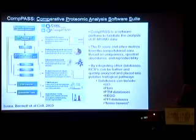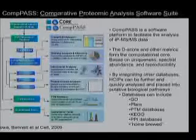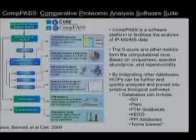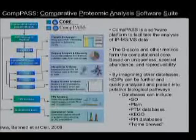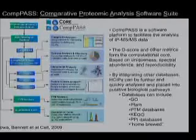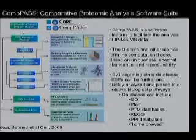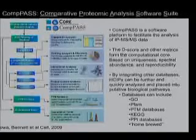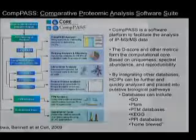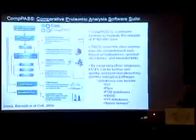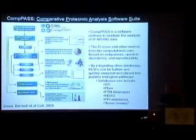What we ended up doing was developing a software platform called COMPASS — Comparative Proteomic Analysis Software Suite — that helps get around many of these problems. It has two major components: a computational component, which is mainly a number-crunching set of algorithms that take the number of peptide scans emerging from each protein in each bait and establish three different scores — a z-score, a d-score, and a p-value associated with the d-score. These algorithms give us a really good indication of what's a real positive versus a false positive.